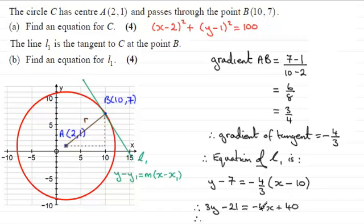And I would now want to add 4x to both sides, making it a positive term. Then we've got 3y, and then I'd want to subtract 40 from both sides. So minus 21 minus 40 is minus 61, and that would equal 0.